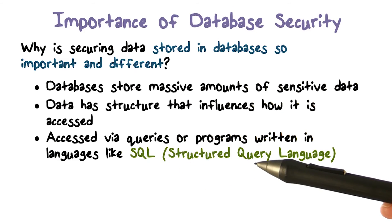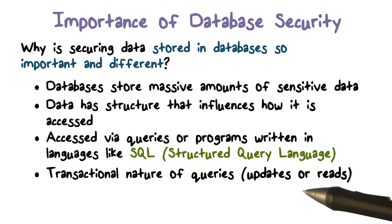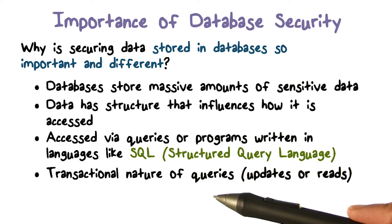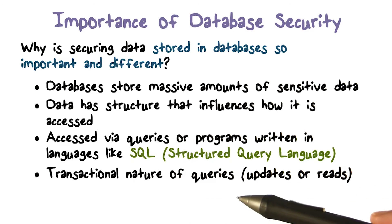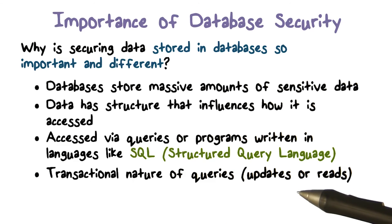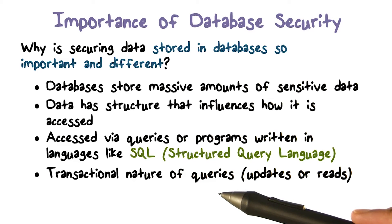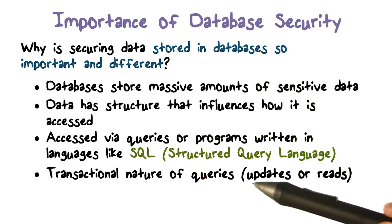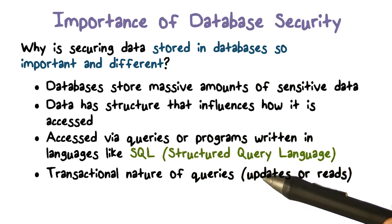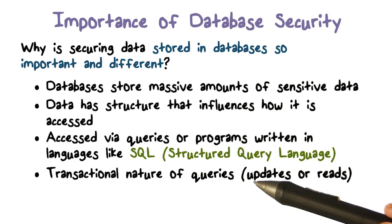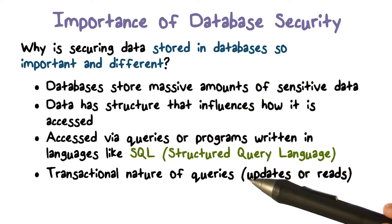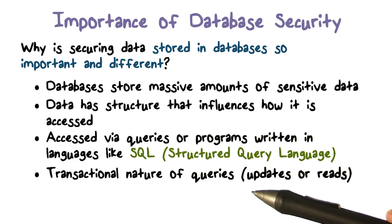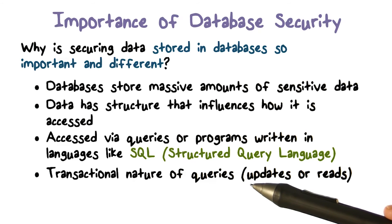This is another thing that is different about databases: they store data that is persistent, like files. We also need integrity of the data. One way to achieve that is through the transactional nature of queries or programs we run on the database. A transaction means either the program runs completely and does everything it's supposed to do, or whatever it did gets undone — it's a zero or one property, either done completely or not done at all. Running a partial transaction could leave the database in an inconsistent state, which impacts integrity.